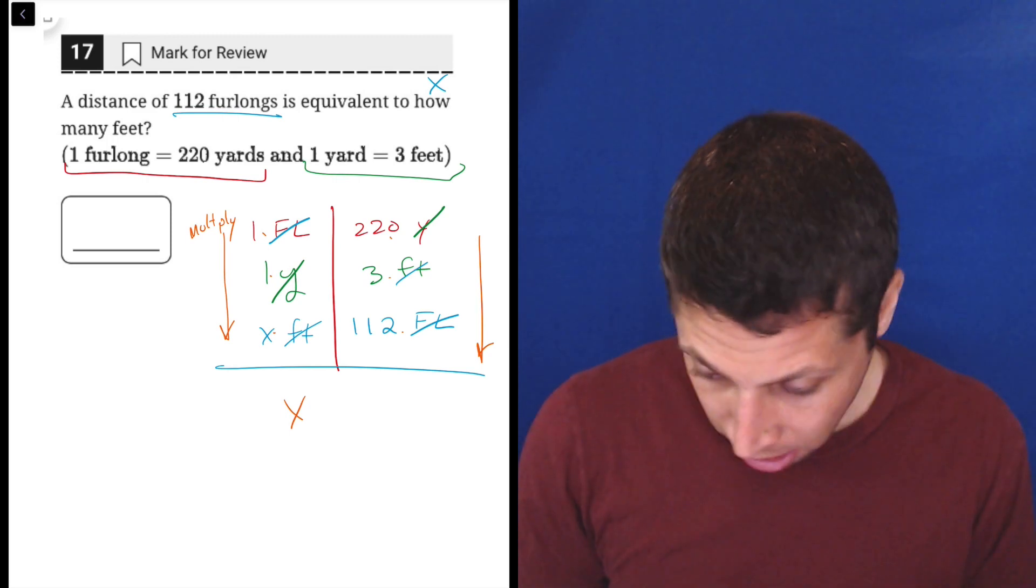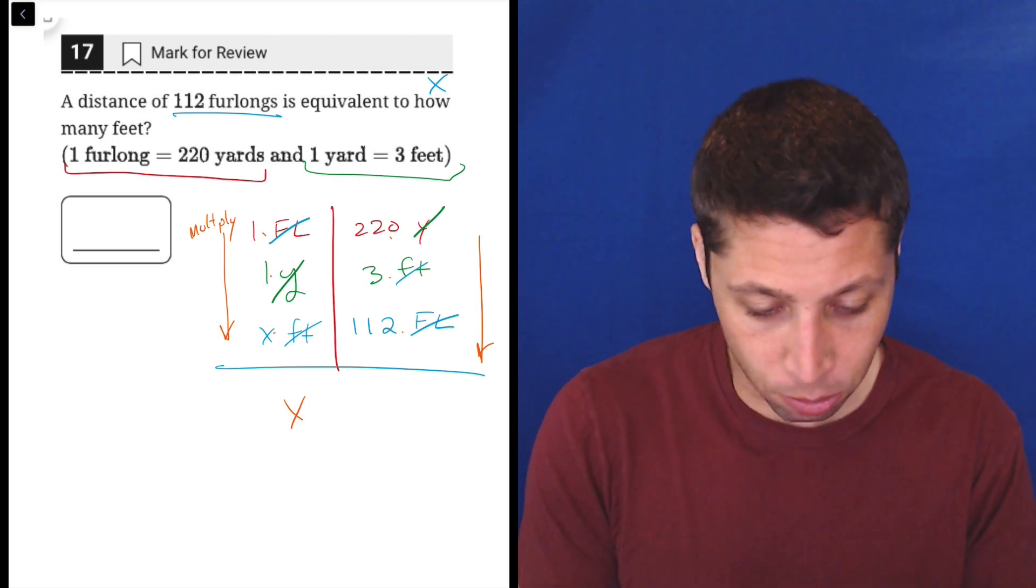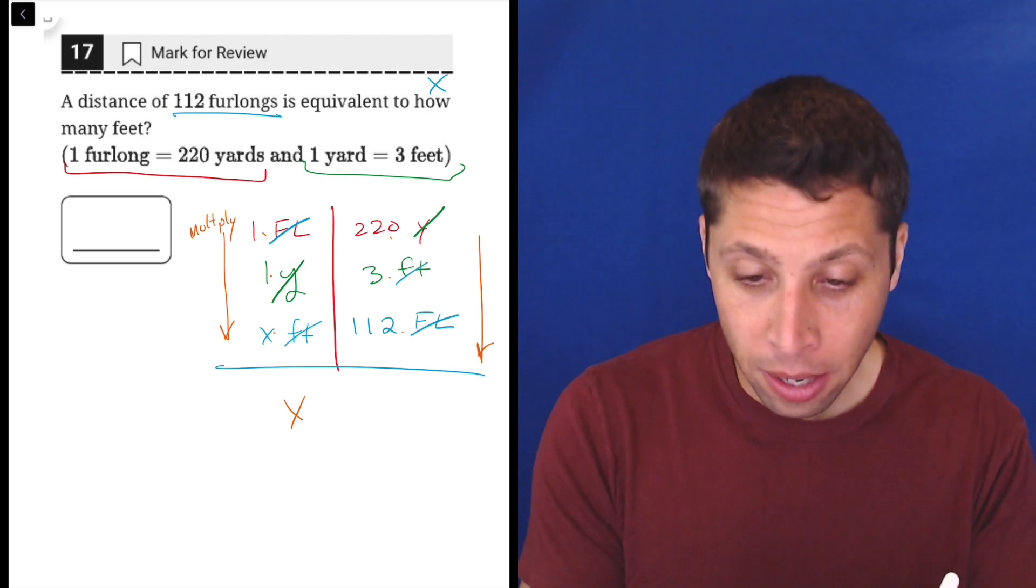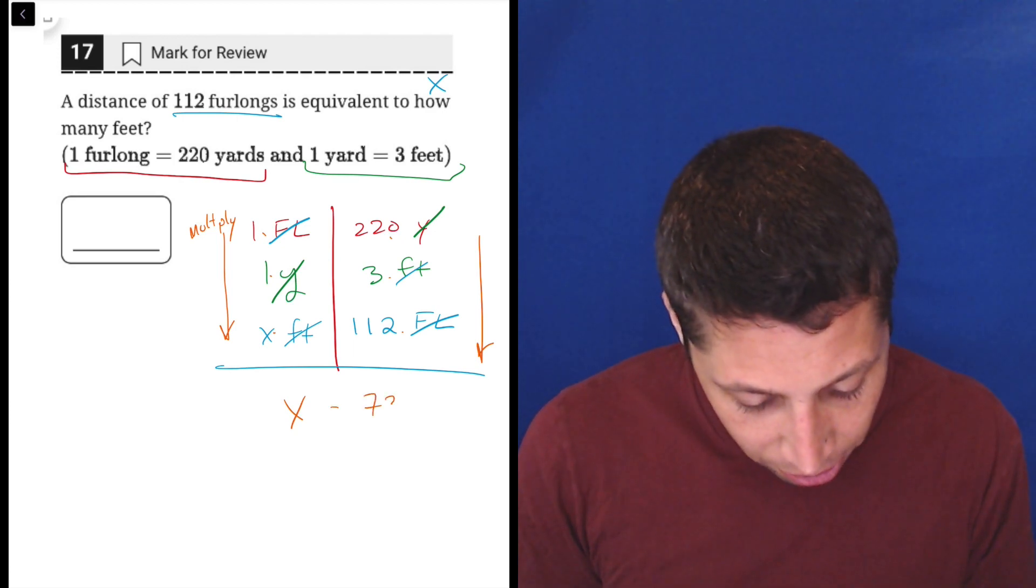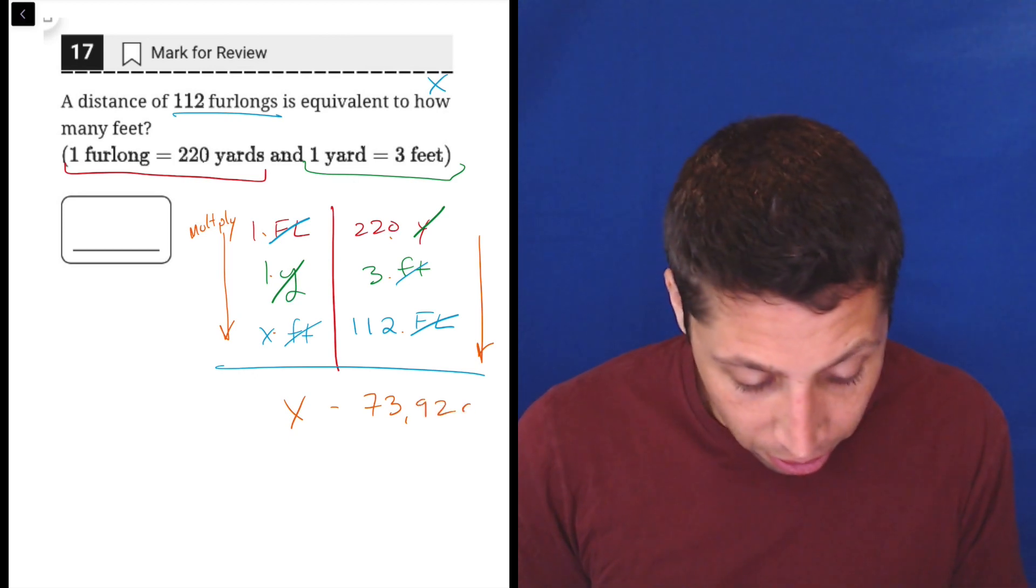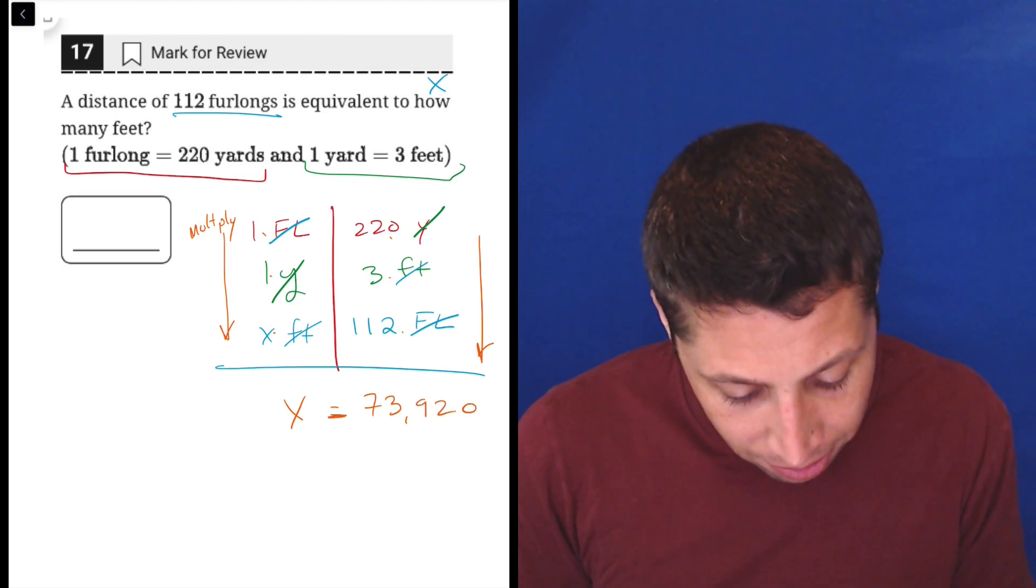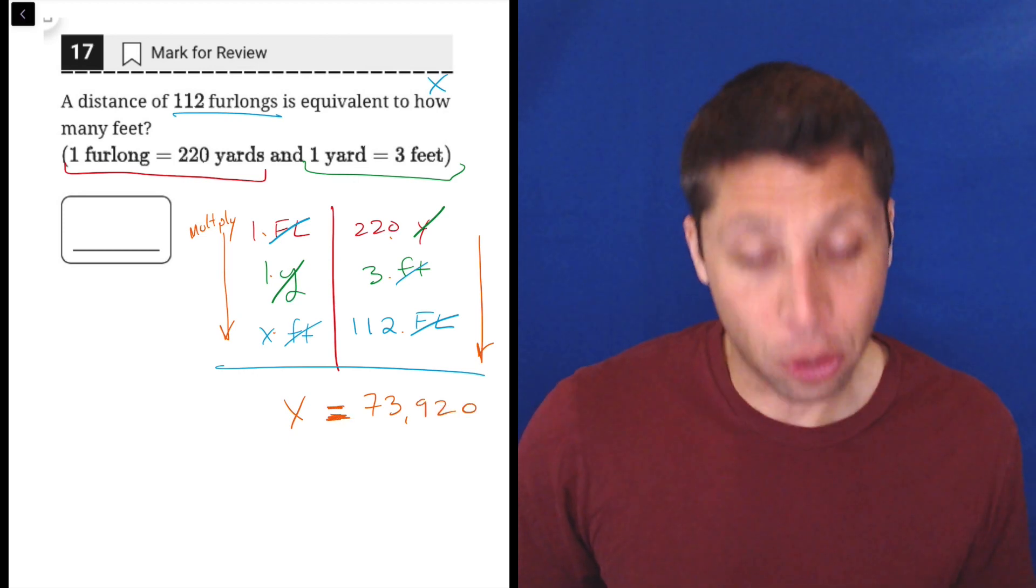220 times three times 112 is, oh sorry, 220. See, this is why you write things down, because occasionally you enter them in the calculator wrong, is 73,920.